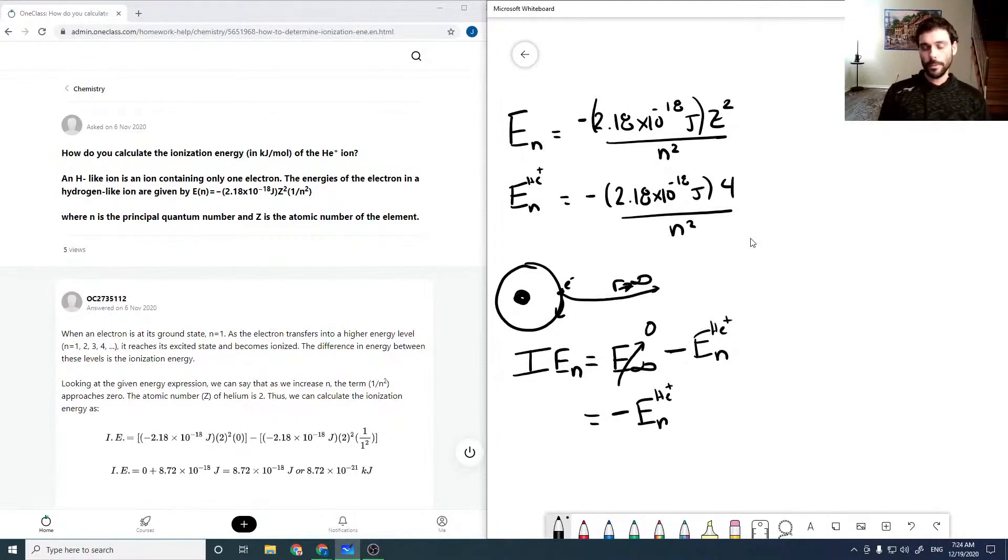So quite simple: the ionization energy is just the negative energy of the state. And so for the hydrogen equation, it comes out to be positive, these values.